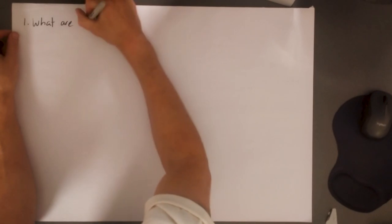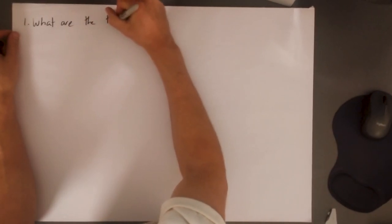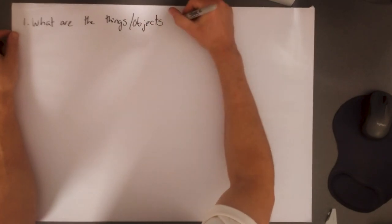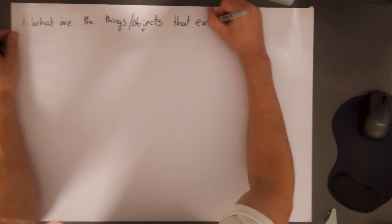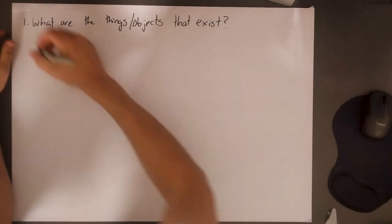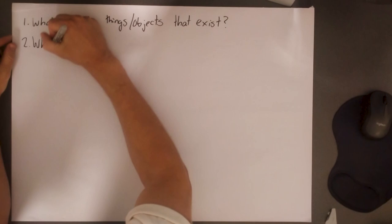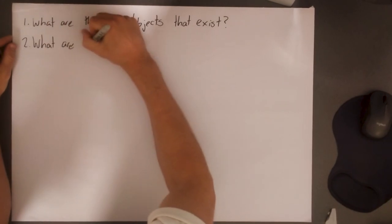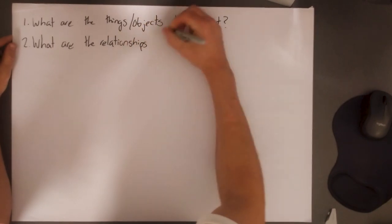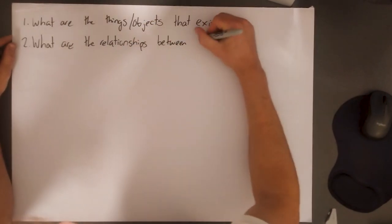When you're configuring a database, there's really two questions to keep in mind. The first one is: what are the things — all the objects, as you might sometimes hear them called — that exist in the world I'm creating? The second one is: what are the relationships between these things?